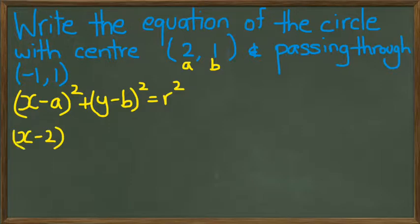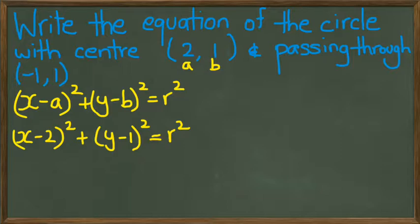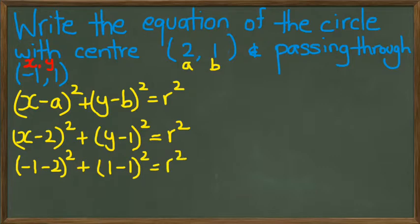Now we have been given the values of x and y because x and y is actually here. So we can substitute these values and find out what the radius is going to be. So we would then have (-1 - 2)² + (1 - 1)² = r².